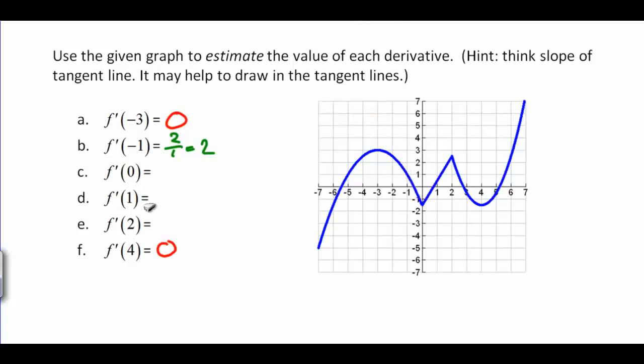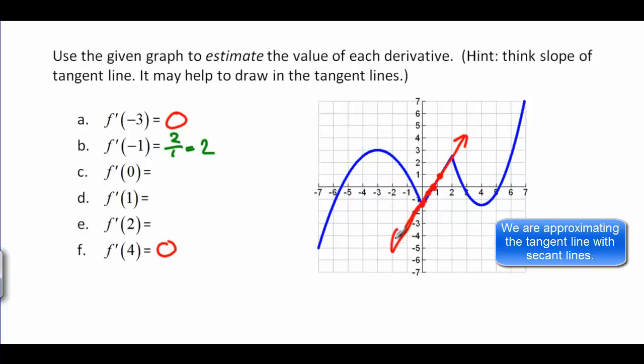Now if we look at f prime at 0, here is a very interesting thing. Because if I put a point here where x is 0, and I pick any point over here on the right side to estimate the tangent line, it would look like this.